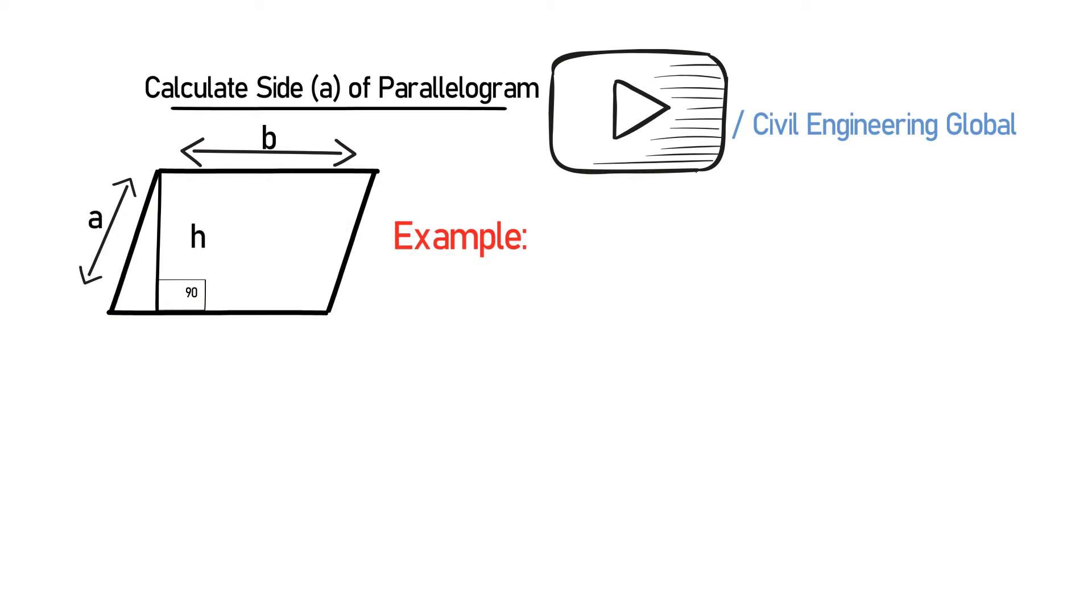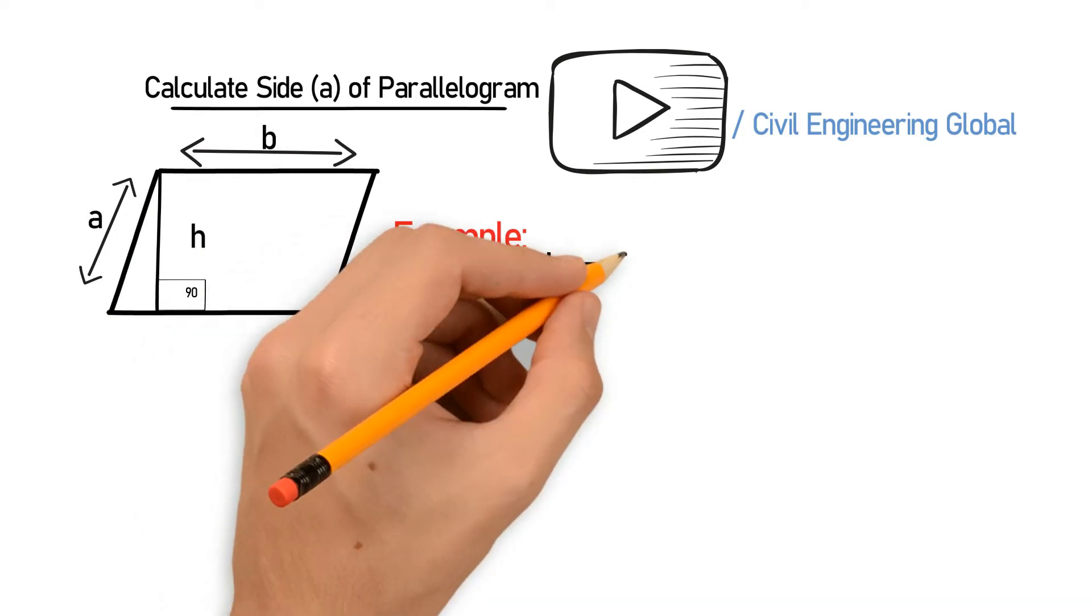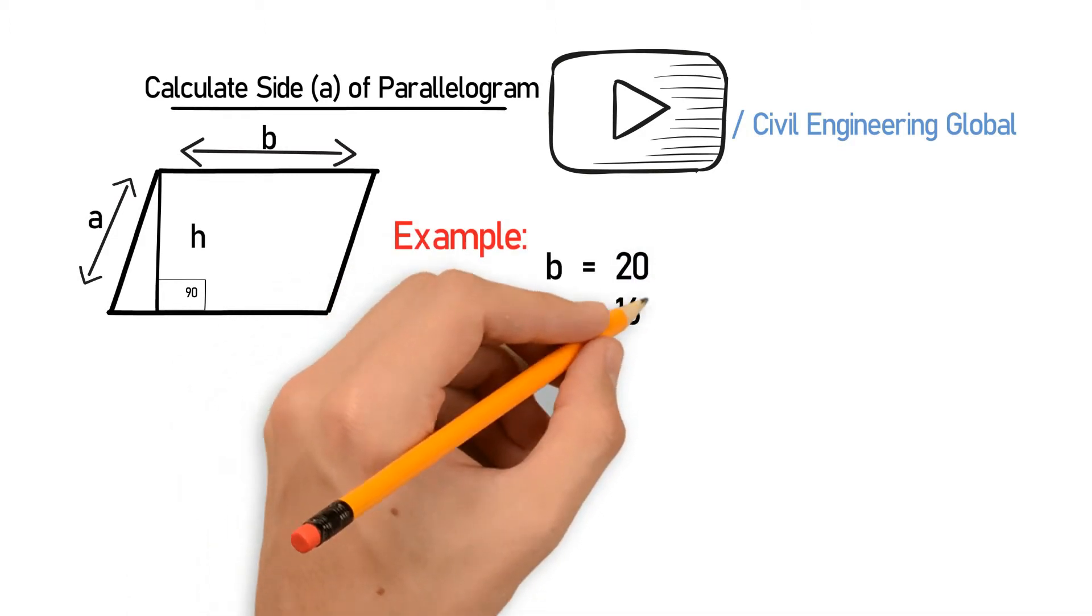So let's take an example. In this example, we have the following data: B is equal to 20, and perimeter P is equal to 160.